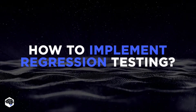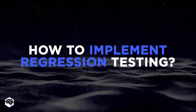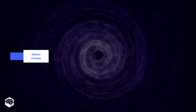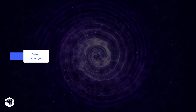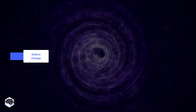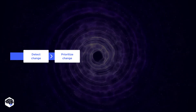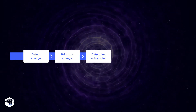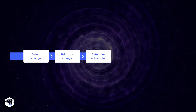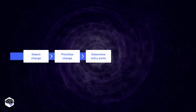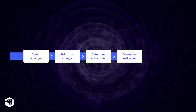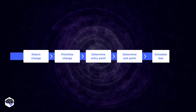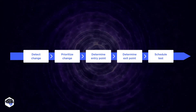How do we implement regression testing at Gelvix? Let's follow the process step by step. Step 1: Detect modifications in the source code and their impacts on features. Step 2: Prioritize these changes and product requirements. Step 3: Determine entry point and entry criteria to see if your app meets the preset eligibility. Step 4: Determine the final point for the required eligibility. Step 5: Identify all test components and schedule tests.